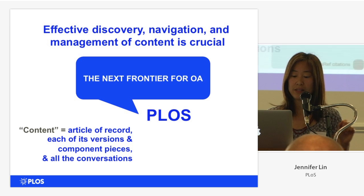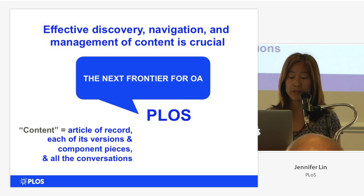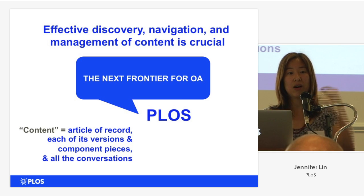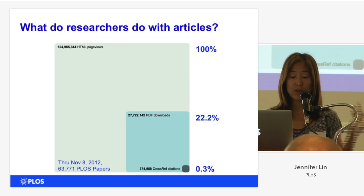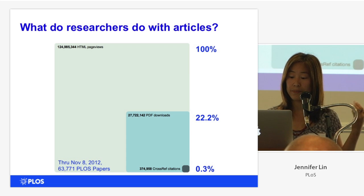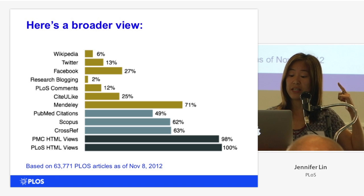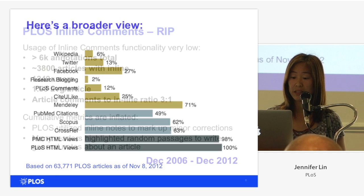By content, I want to say that it's not just the article of record that we are publishing, but each of its versions, all of its component pieces including the underlying data, and all the conversations that are happening around the article itself. We know that researchers are engaging with our primary content in a number of ways — research articles are being viewed, downloaded, and cited. Here's a broader view, not only into usage and citation, but other ways in which researchers are bookmarking, commenting, blogging, and sharing this literature.